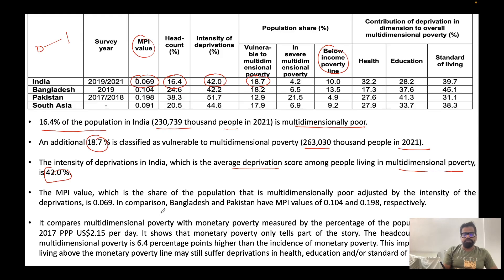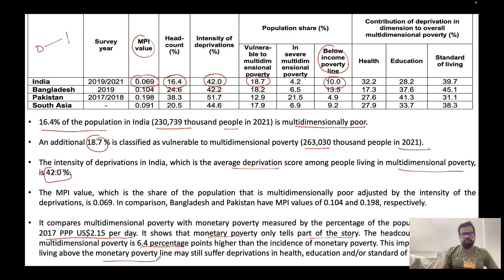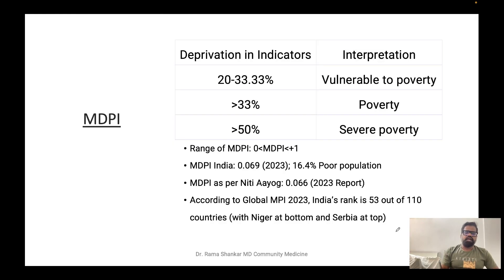India's MPI is also compared with monetary poverty, which measures the percentage of population living below 2017 PPP USD 2.15 per day. Monetary poverty only tells one part of the story. The headcount incidence of multidimensional poverty in India is 16.6 percent, but when considering income poverty alone it is only 10 percent. This 6.4 percentage point gap means individuals living above the monetary poverty line may still face deprivation in health, education, and standard of living — money is not everything.